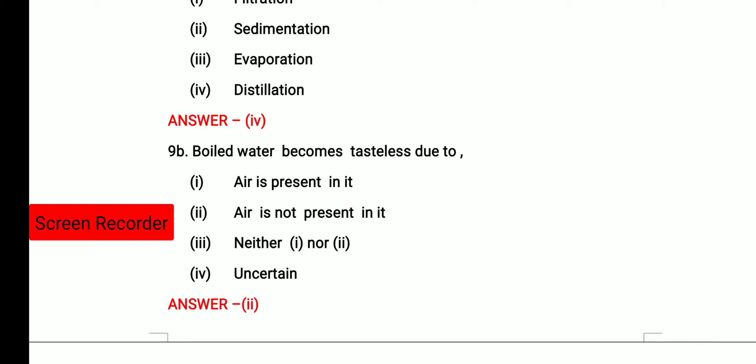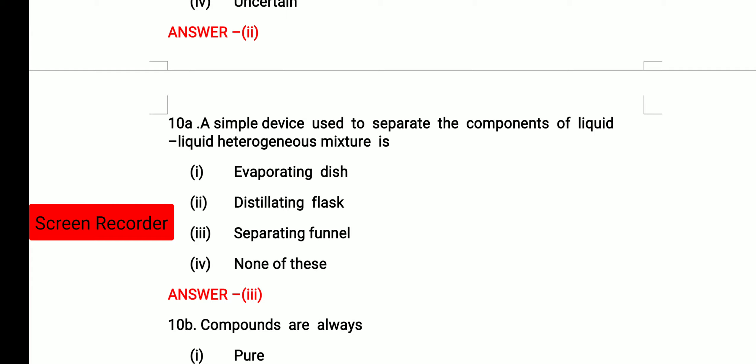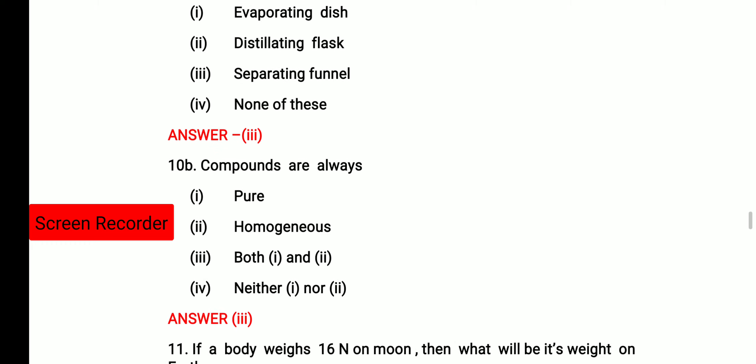The next question, boiled water becomes tasteless due to air presented in it, air is not present in it. Option 2 is correct, that air is not present in it. Because as you boil the water, the dissolved air will get evaporated. Then a simple device used to separate the components of liquid-liquid heterogeneous mixture. Which device is used, that is separating funnel. So option 3 is the correct answer. Compounds are always pure, homogeneous, both one and two. So option 3 is correct because compounds are pure as well as homogeneous.